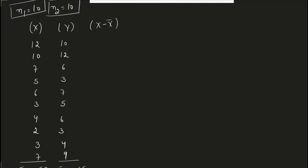The next column is x minus x̄. Always remember: whatever method or step we apply with the X variable, we apply the exact same method with Y as well. It's not the case that if you're calculating the mean of X, you skip the mean of Y. Whatever you do with X, you must also do with Y. So if we're calculating x minus x̄, the next step will also be y minus ȳ.